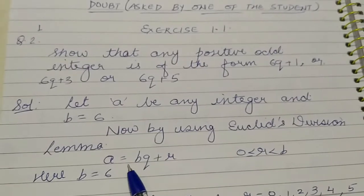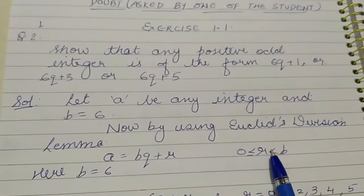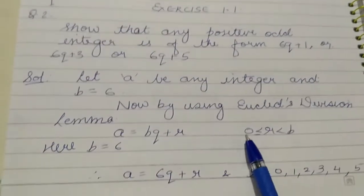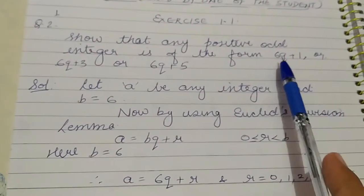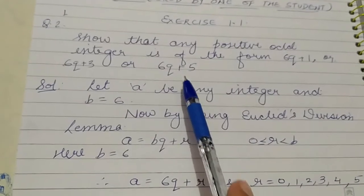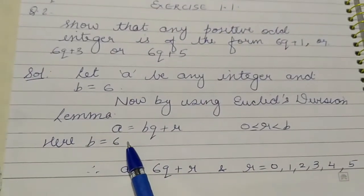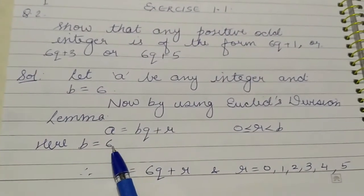a is equal to bq plus r where r is less than b and greater than equal to 0. Here b equals to 6 because of these three terms 6q plus 1, 6q plus 3, or 6q plus 5. We consider b equals to 6.